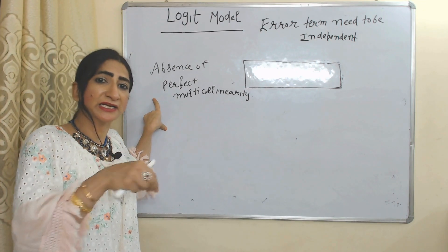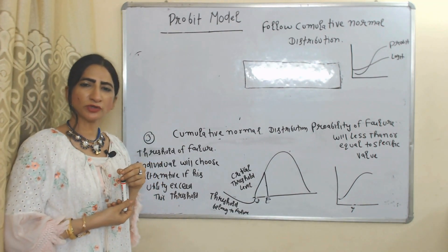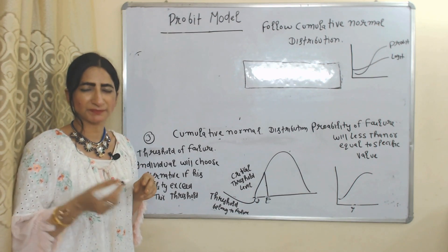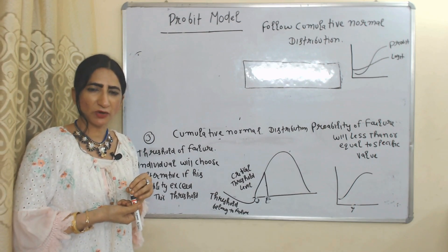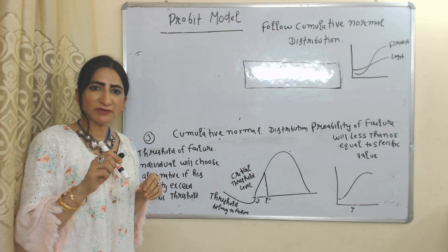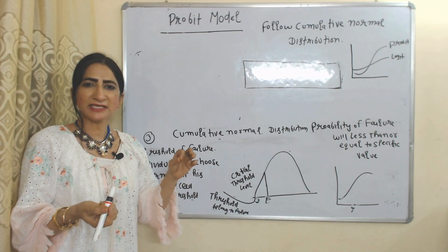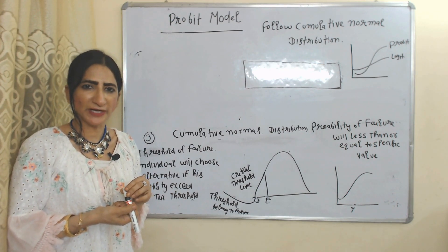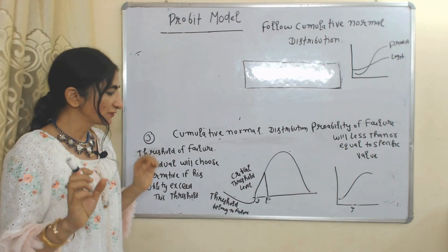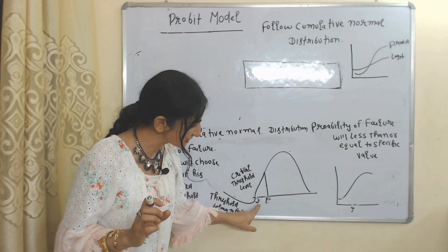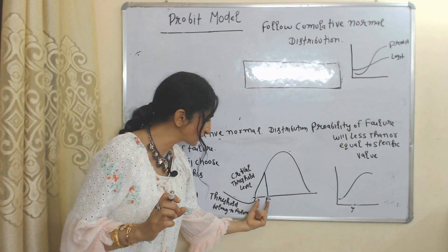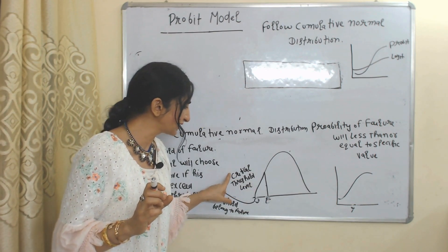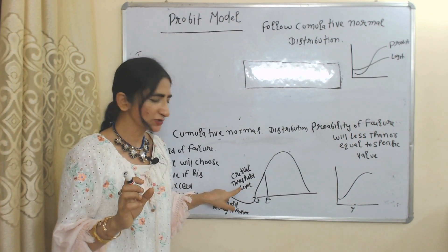Now we are going to talk about the probit model. The probit model follows cumulative normal distribution. Cumulative normal distribution describes a value less than or equal to a specific point. For example, a value equal to or less than a specific point — the area to the left of that point is called the area of failure, or the critical threshold level.